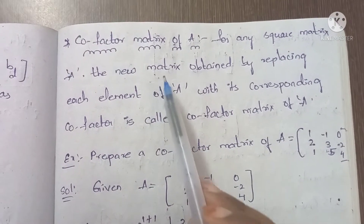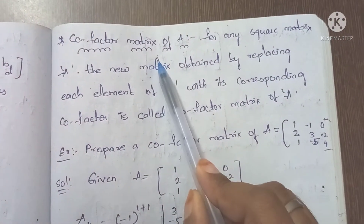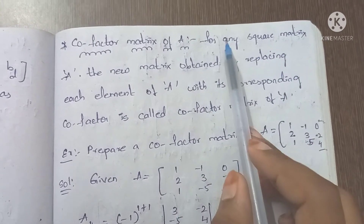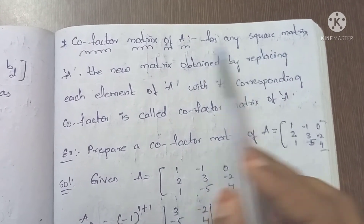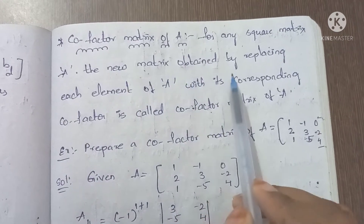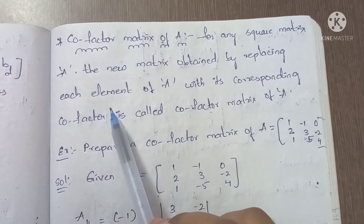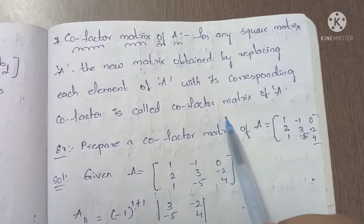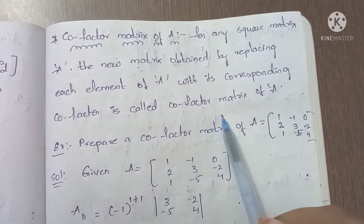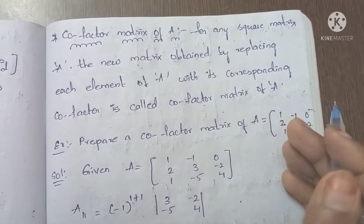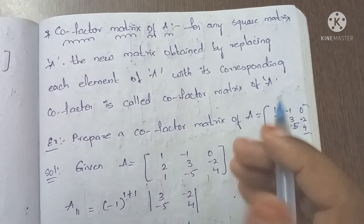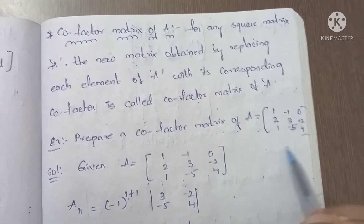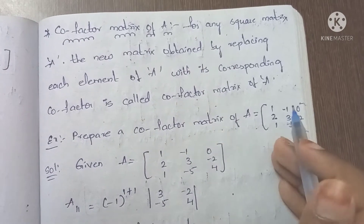Next, we find the cofactor matrix. The definition: for any square matrix A, the new matrix obtained by replacing each element of A with its corresponding cofactor is called the cofactor matrix of A. We now find the cofactor matrix of A.